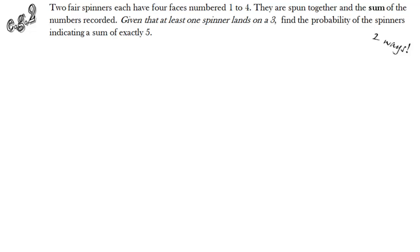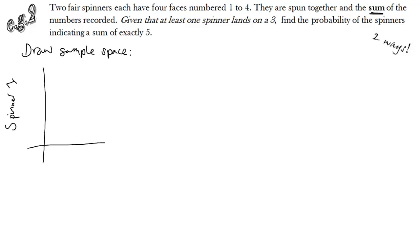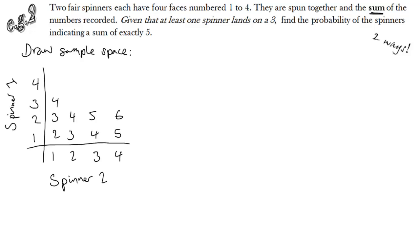So, spinners. We've got four possibilities on each of these spinners, equally likely. We're going to draw a sample space, as we've seen in the previous lesson. Two spinners, each one has an axis, and we put the possibilities one, two, three, four for each. When we fill in the grid for the sum, that gives us sixteen equally likely outcomes — that's our sample space.